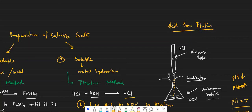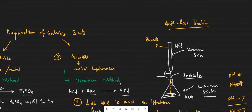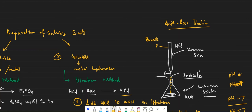The known solution is placed in the burette and the unknown solution in the titration flask (conical flask), where the indicator is also added. For example, HCl goes in the burette and KOH in the flask. Adding methyl orange indicator, the solution will show yellow in alkaline conditions. As HCl is added drop by drop, the pH decreases from alkaline toward 7.